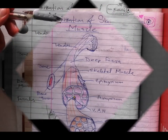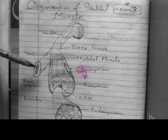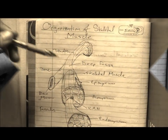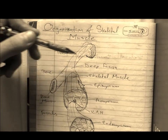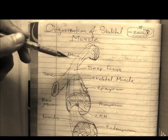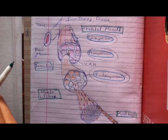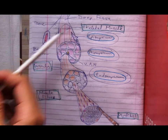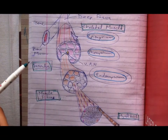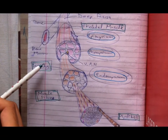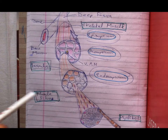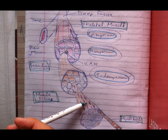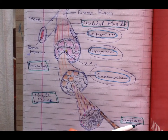We're starting organization of skeletal muscles. Here's a bone and here's a muscle attached to it. Where the muscle attaches to the bone is called a tendon. Here's a breakdown of the skeletal muscle. The skeletal muscle is made up of fasciculi, and the fasciculus is made up of muscle fibers, and a muscle fiber is made up of myofibrils.